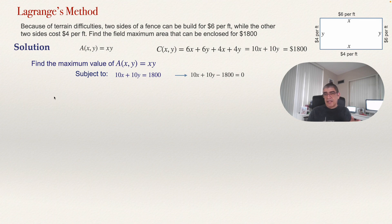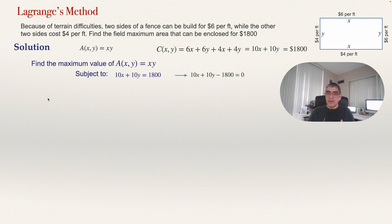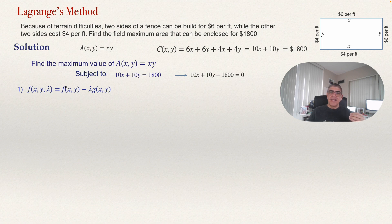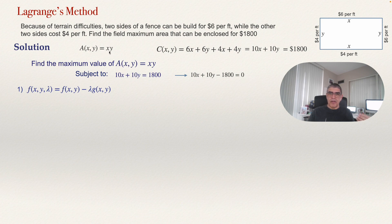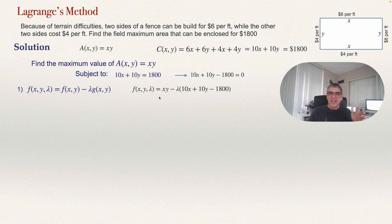Now that we have this, let's go through the steps. After defining the problem, follow three steps. Step one: get the Lagrange function. The Lagrange function introduces a new variable lambda, and equals the function we want to maximize minus lambda times the constraint. So it will be XY minus lambda times (10X plus 10Y minus 1800). Expand this to: XY minus 10 lambda X minus 10 lambda Y plus 1800 lambda.